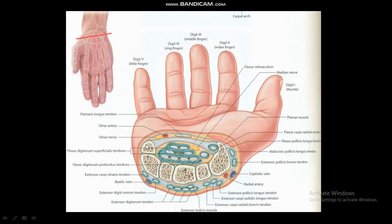In this picture we can see that this fibrous connective tissue band is known as the flexor retinaculum. The flexor retinaculum is also known as the transverse carpal ligament, and it is covering the carpal tunnel from the anterior side. So the anterior boundary of the carpal tunnel is the flexor retinaculum, and the posterior boundary is formed by the carpal bones located at the posterior side of the carpal tunnel.